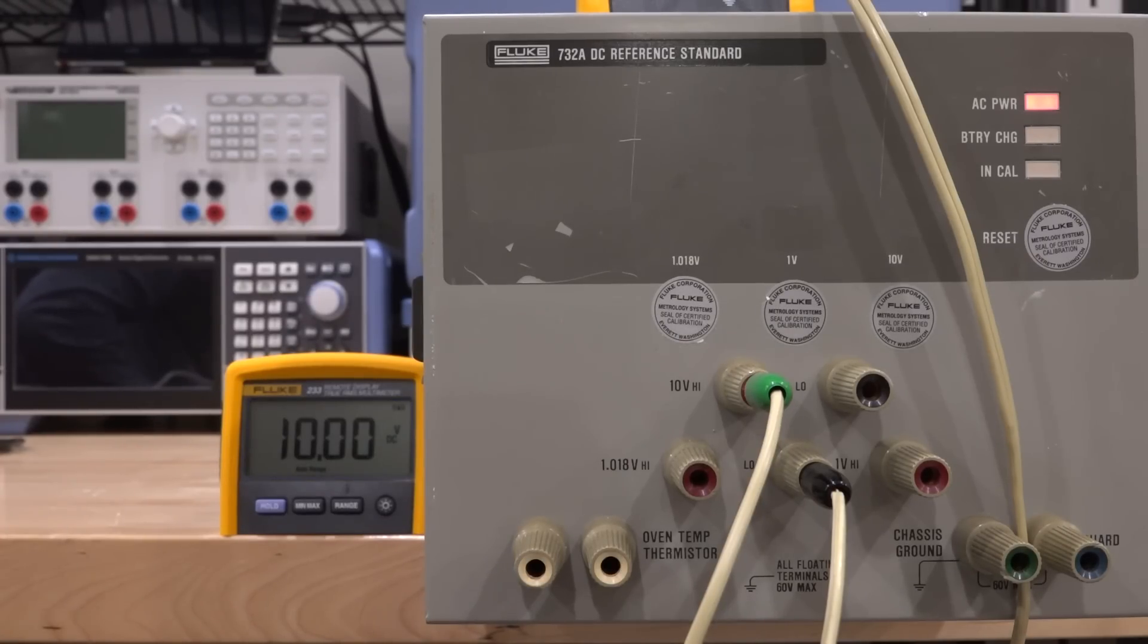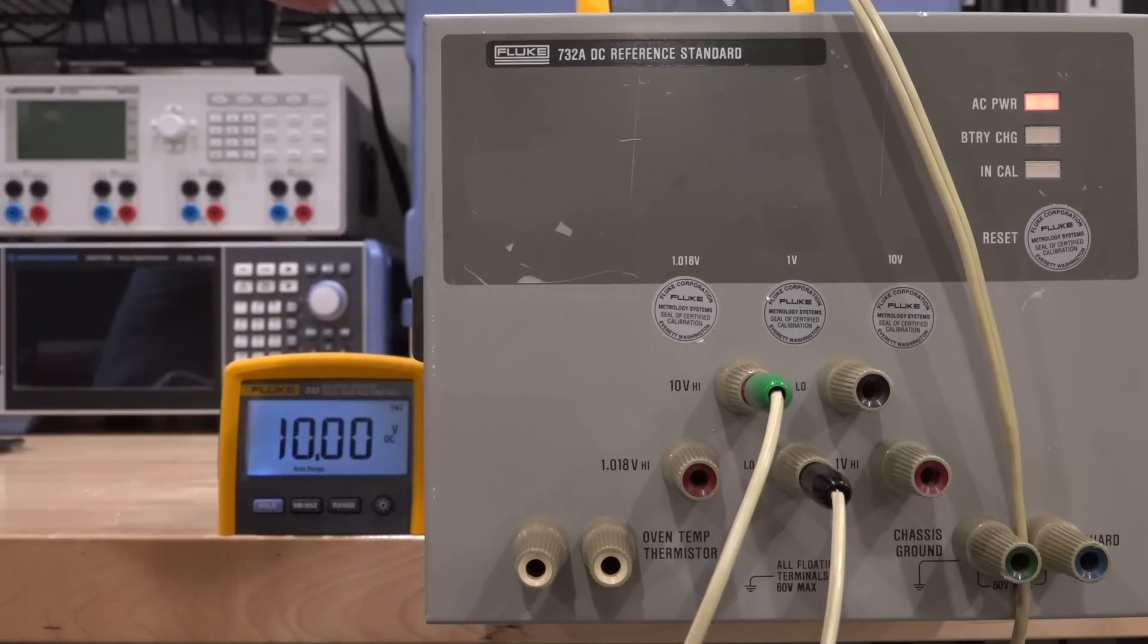I'll show you what the problem is and see if we can fix it. As you can see, the unit does turn on and it does produce the 10 volt as expected from its main 10 volt output. There's no battery in this and the in-cal light is of course not on because the battery is already in discharge.